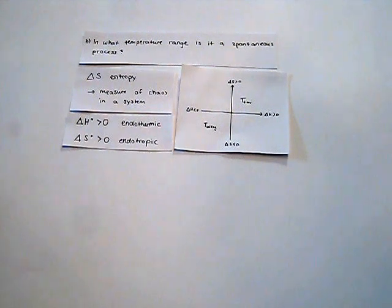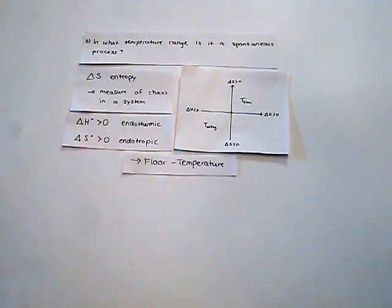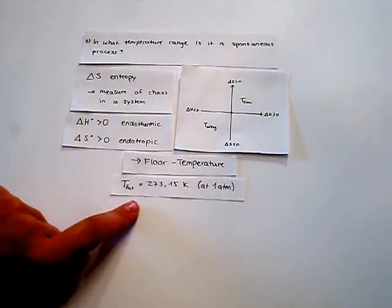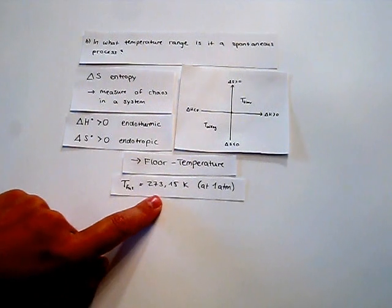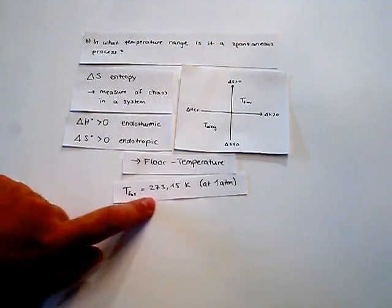And so we need a special threshold temperature to let the process happen spontaneously. This threshold temperature is in this case the temperature of fusion, and the temperature of fusion of water is 273.15 Kelvin at one atmosphere.